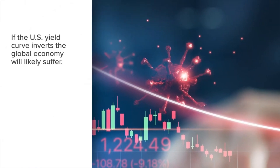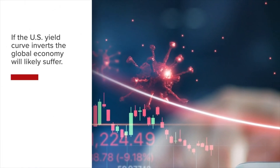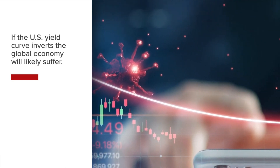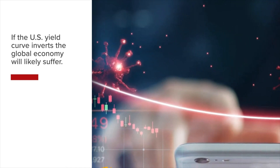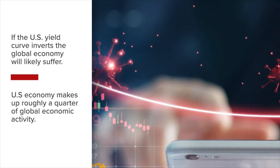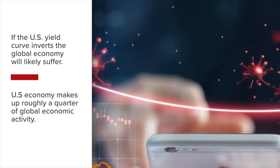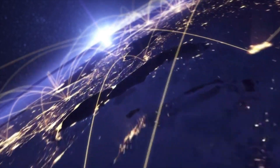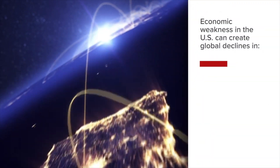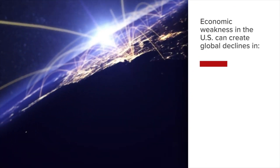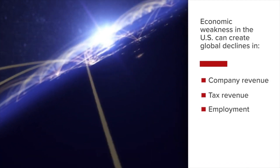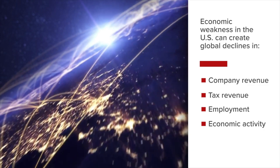If the yield curve inverts in the U.S., like it did prior to the 2008 financial crisis and the 2020 COVID-19 recession, the global economy will likely suffer economic consequences as well. The global economy depends a lot on the health of the U.S. economy, as it makes up roughly a quarter, or 25%, of global economic activity. Amplifying impacts, the U.S. is the largest importer in global trade, carries a trade deficit, and issues the world's reserve currency. Economic weakness in the U.S. will likely spread globally and weigh on international economies, with global declines in company revenue, tax revenue, employment, and economic activity expected when the U.S. economy is in recession.